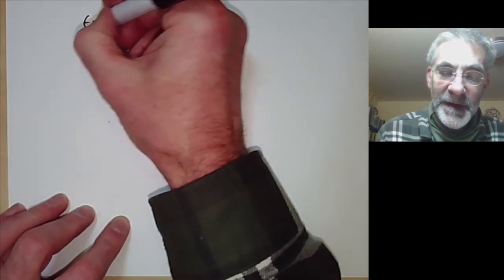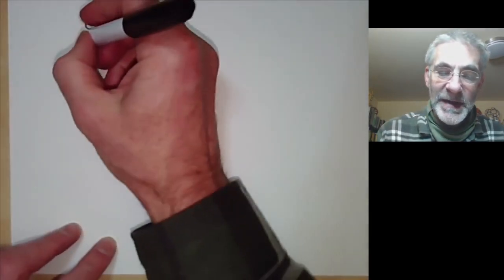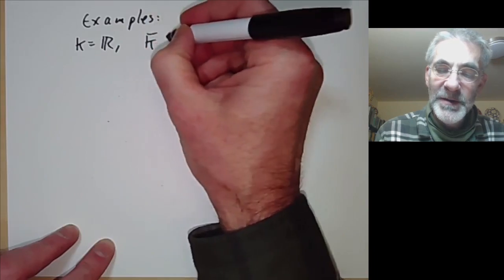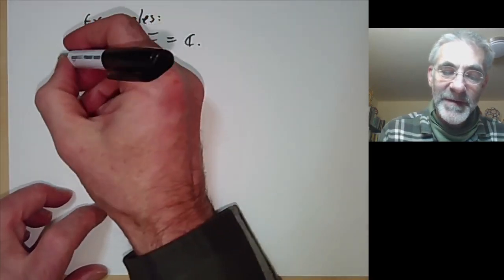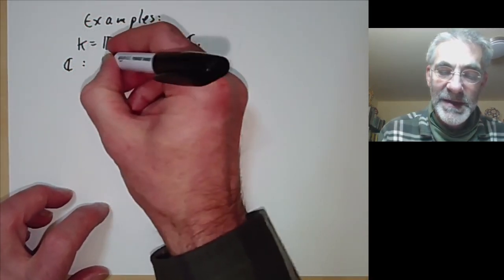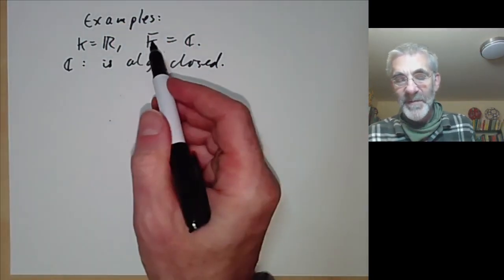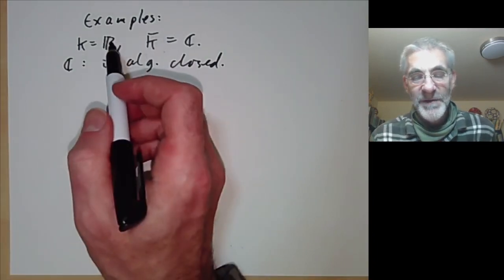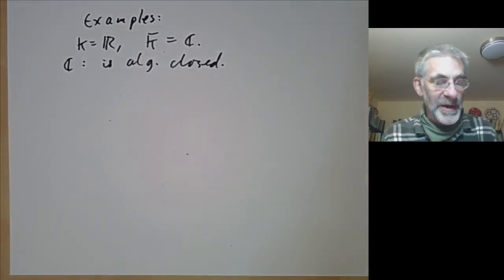Let's have some examples of algebraically closed fields. The example that everybody knows is: take k to be the field of real numbers, and then the algebraic closure is the field of complex numbers. This is sometimes called the fundamental theorem of algebra — it says that the complex numbers is algebraically closed. In fact this is a particularly easy example because we only need to take a degree-2 extension of ℝ, whereas in general the algebraic closure of a field would be a huge infinite extension.